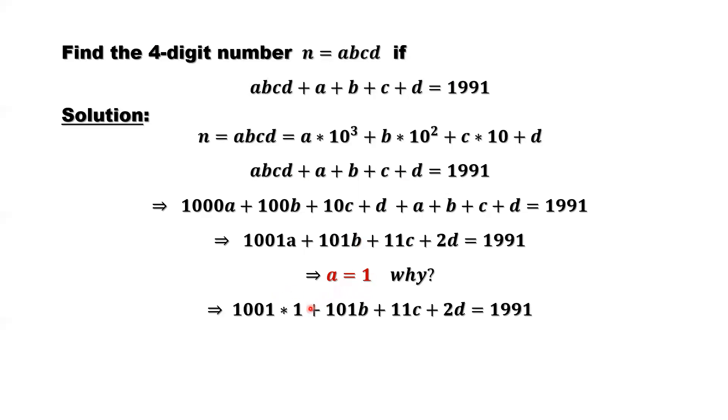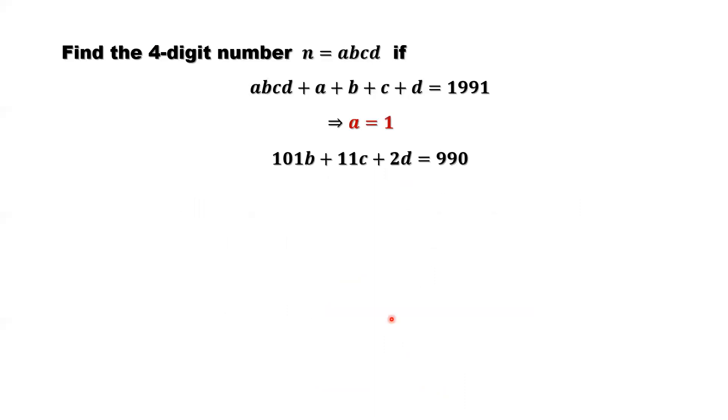If A is 1, we already fixed the first number. Just to replace A by 1, simplify this expression. So move this term to the right-hand side. So right-hand side minus 1,001. Continue to simplify. We have this one. Move to the next page. So what do we have now? A equals 1. The first number equals 1, and we also have this one. So now we need to figure out the B. How to figure out the B?